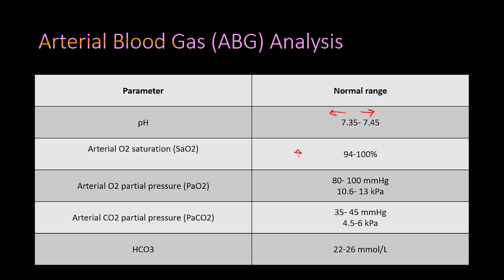If oxygen saturation is below 90 percent, this is called hypoxemia. The normal arterial oxygen partial pressure is 80 to 100 mmHg (10.6 to 13 kPa); below 60 mmHg or 8 kPa indicates hypoxemia. The normal arterial carbon dioxide partial pressure is 35 to 45 mmHg (4.6 to 6 kPa). A value above 45 mmHg or 6 kPa indicates respiratory acidosis and hypoventilation.